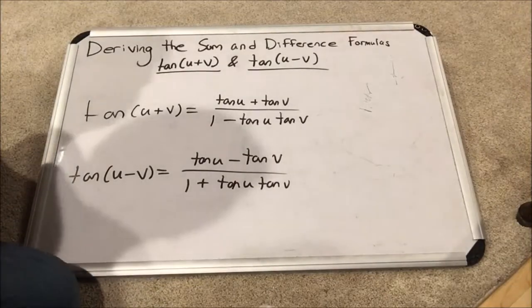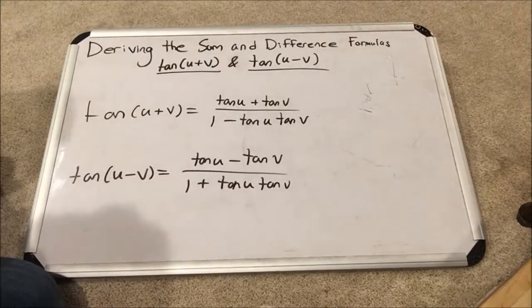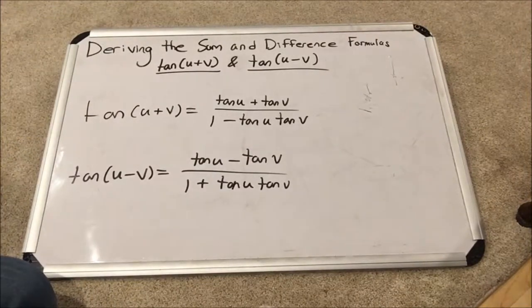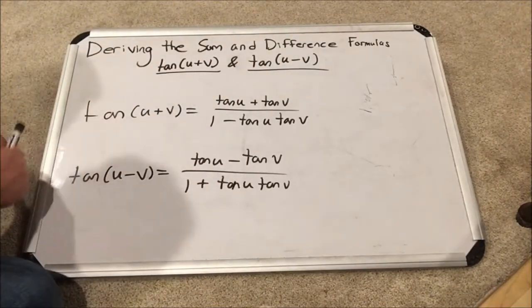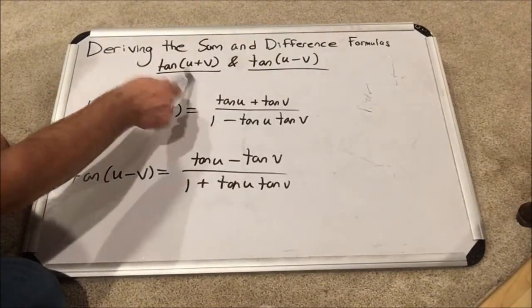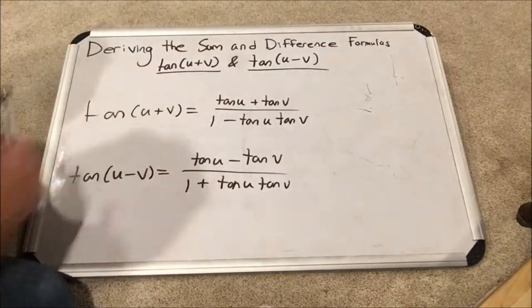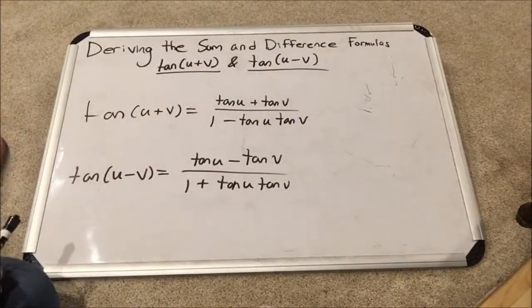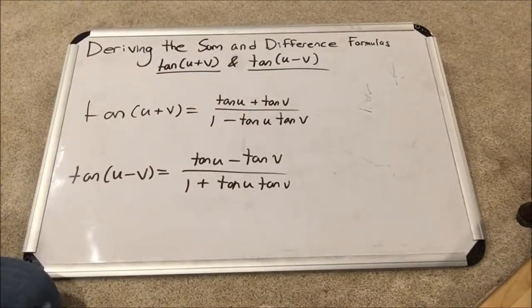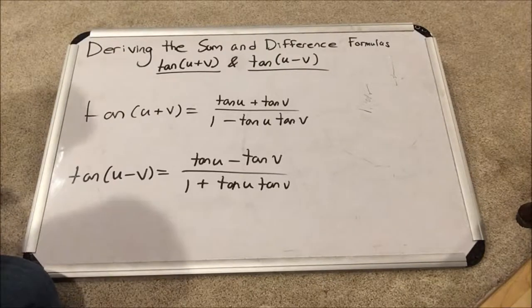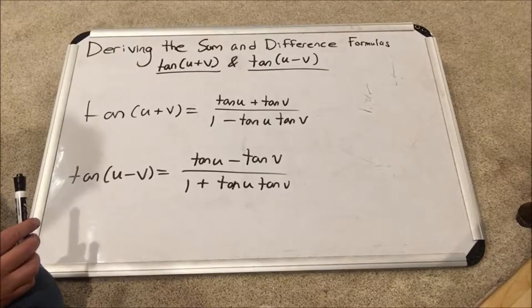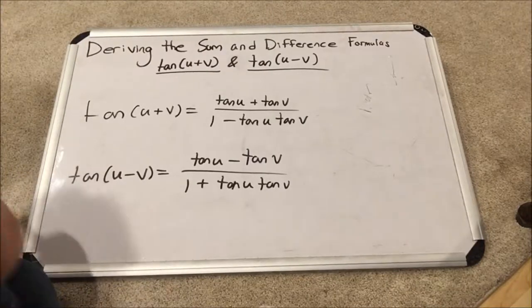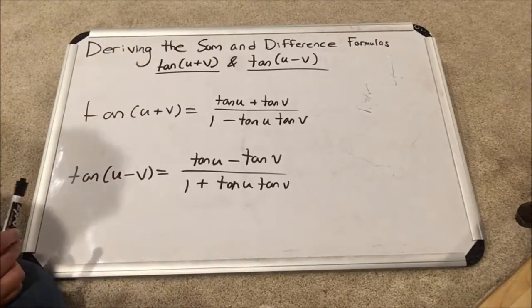Alright everyone, welcome to TutorTerrific. This is part three of our three-part series on deriving the sum and difference formulas. Today we are going to specifically derive the formulas for tangent of the sum of two angles and the tangent of the difference between two angles. These formulas are amazing because they are the foundation for so much of analytic trigonometry. A bunch of other formulas can be derived from these guys.